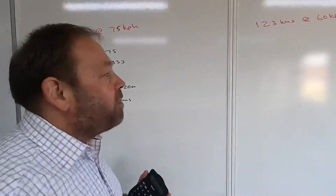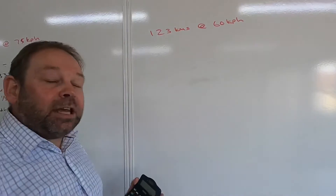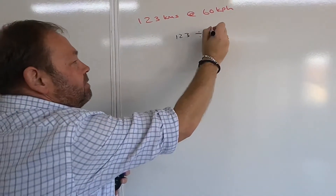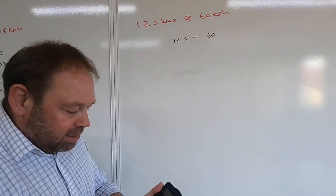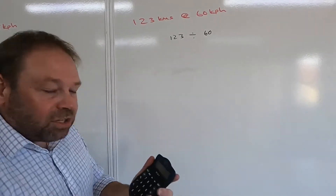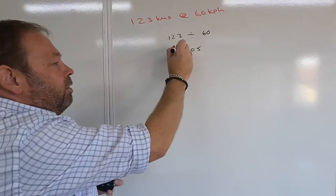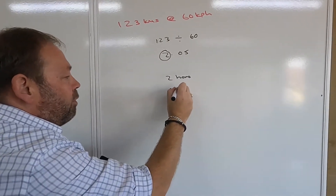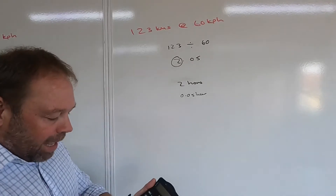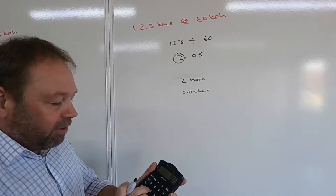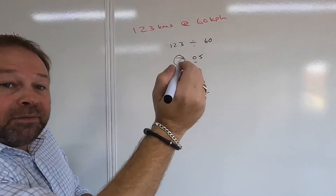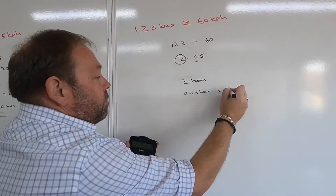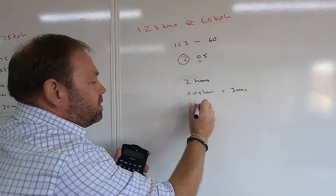Our third example gives us 123 kilometers at 60 kilometers per hour. Exactly the same procedure — we take 123 and divide it by 60. On the calculator, 123 divided by 60 gives us 2.05. We've got two complete hours and 0.05 of an hour. So we put 0.05 — don't forget to put that zero in, otherwise it's going to give you the wrong answer — multiplied by 60 minutes.